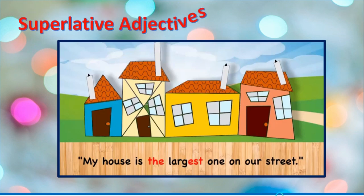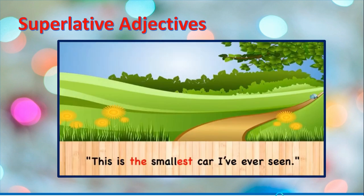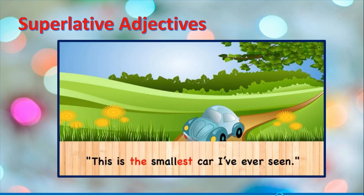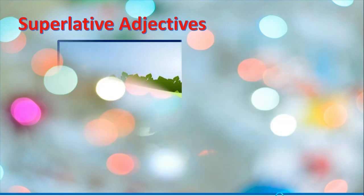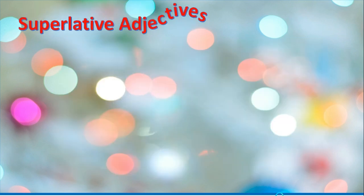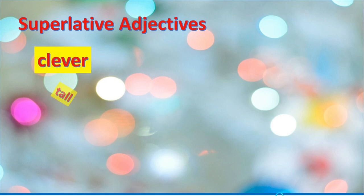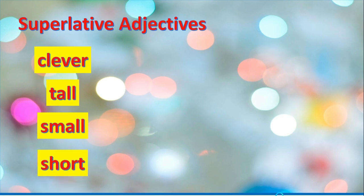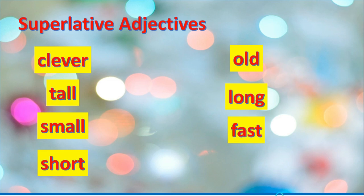We often add EST to an adjective to make it into a superlative. For example: my house is the largest one on our street. This is the smallest car I've ever seen. Here are some example adjectives: clever, tall, small, short, old, long, fast, and slow.